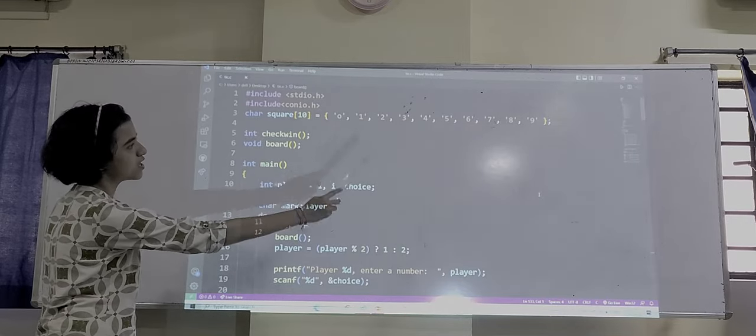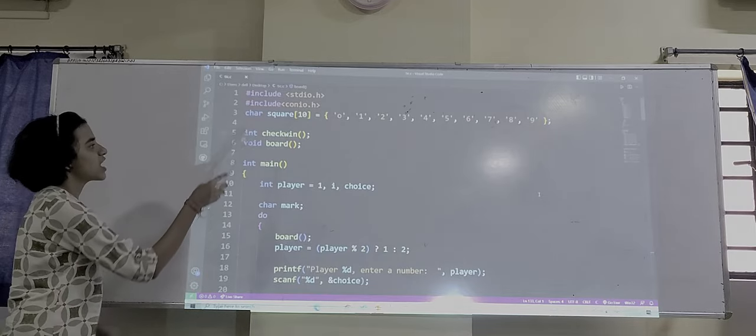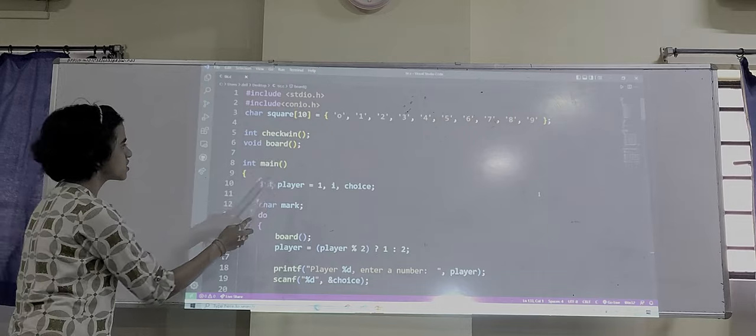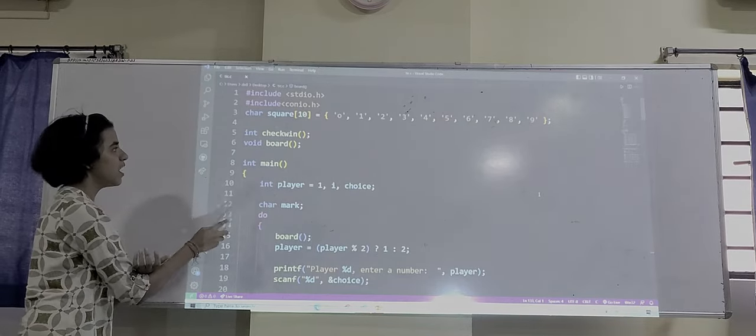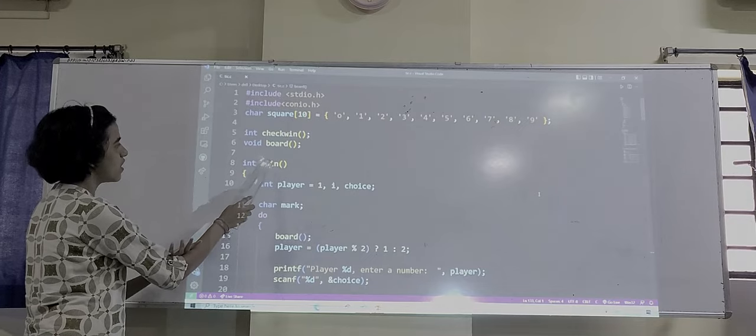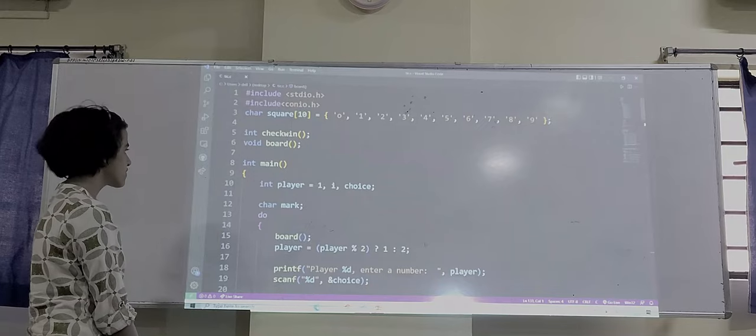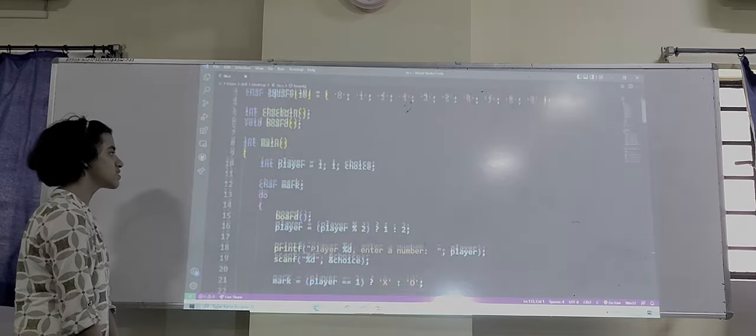There are 10 elements: 0, 1, 2, 3, 4, 5, 6, 7, 8, 9. After that, we have taken the check win. It is a function call. Here we are calling a function check win of integer. After that, we have taken the board.